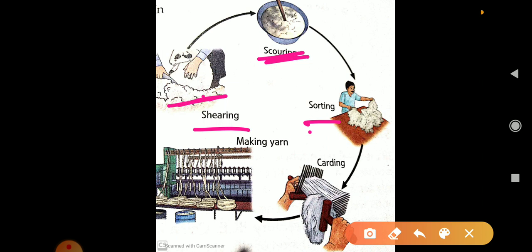Next process is carding. Before wool can be used for making fabric it is disentangled and cleaned. The intermixed fibers are separated to form continuous fiber. This process is called carding. The wool fibers pass through a series of metallic teeth to straighten the fibers.